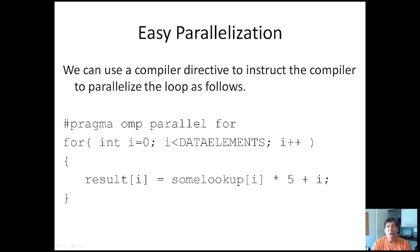OpenMP makes it extremely easy to parallelize loops. It's as simple as using a compiler directive to instruct the compiler to parallelize the loop as follows: #pragma omp parallel for. I use Visual Studio, so I have to go into the Visual Studio project properties and make sure it's set to use OpenMP, otherwise it will just ignore this pragma. So depending on your compiler, you may have to go into the properties and set it to use OpenMP.